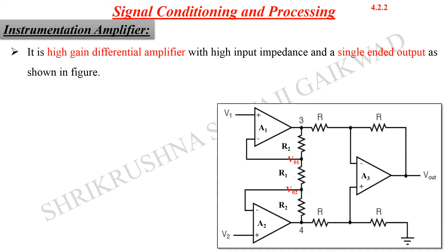In continuation with the previous lecture, today we are going to talk about the instrumentation amplifier. These amplifiers are useful wherever there is a requirement of high gain. In addition, wherever there is a signal overcome by high noise, that noise has to be discarded and the desired signal amplified. This amplifier has a very high common mode rejection ratio, meaning it can reject the common signal between the two inputs and only the difference between the two input signals will be amplified at the output, which is single-ended.